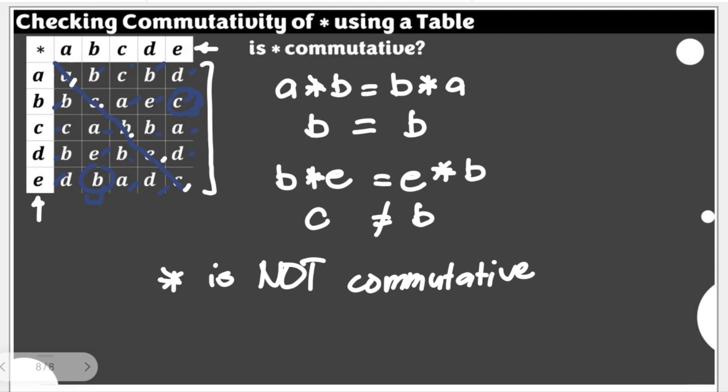Just by drawing this diagonal line, we could see that there are some discrepancy when it comes to the entries on both portions of our diagonal. This is how we determine whether a certain Cayley table is commutative or not. Thank you very much for watching.